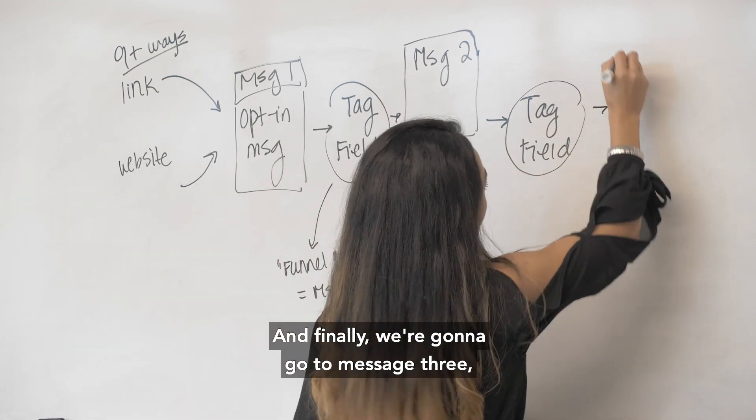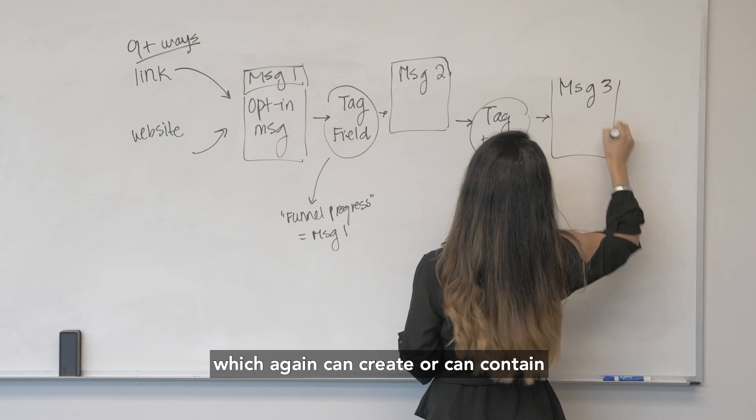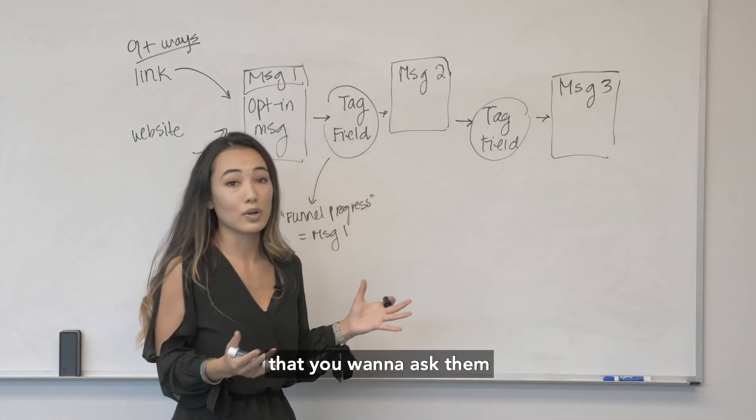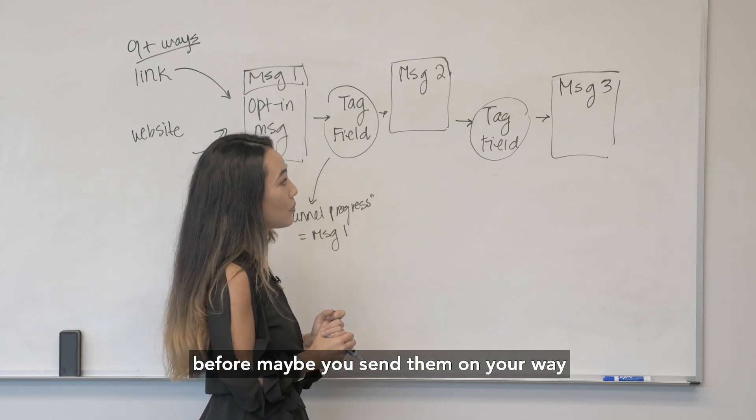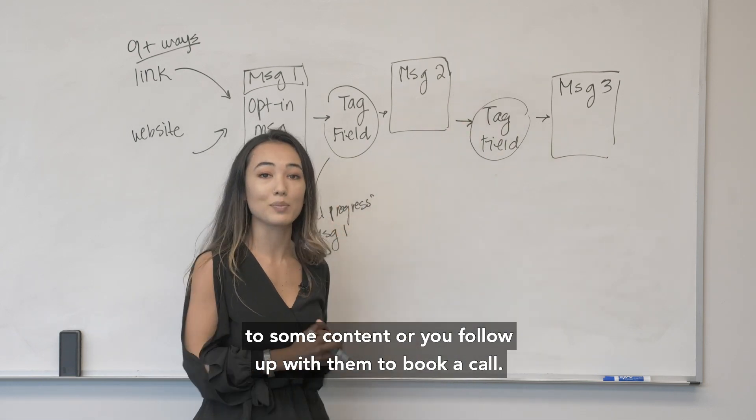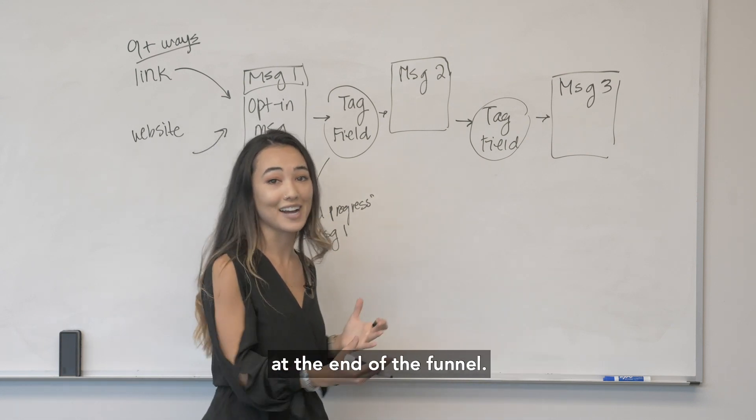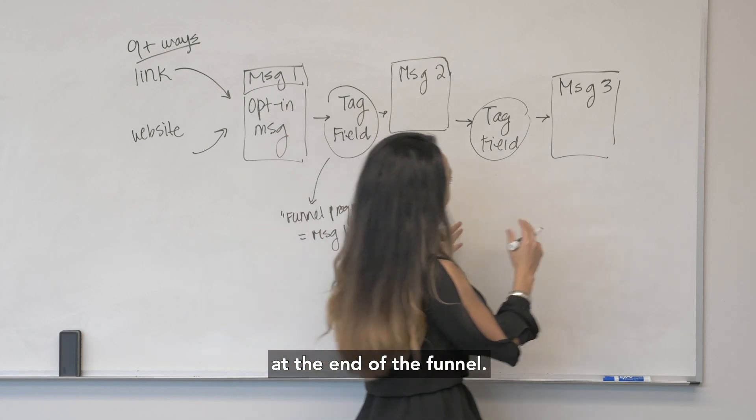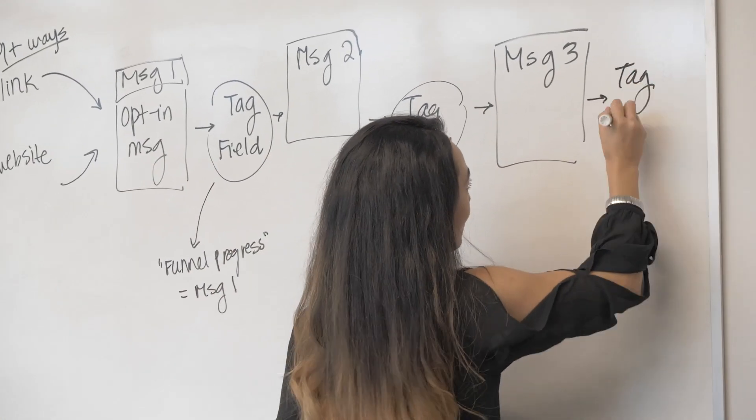And finally we're going to go to message three which again can contain any sort of lead qualifying questions that you want to ask them to really just get more information about them and understand what they're all about before maybe you send them on their way to some content or you follow up with them to book a call, whatever the goal or the call to action is at the end of the funnel. And then we're also going to have our tag and our field over here.